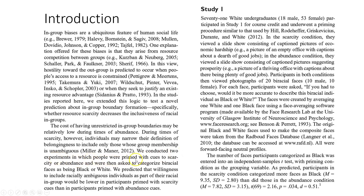'We conducted two experiments in which people were primed with cues to scarcity or abundance, and were then asked to categorize biracial faces as being black or white.' Something would trigger thoughts of scarcity or abundance, and then participants were shown biracial faces and told they needed to categorize whether that person is black or white. 'We predicted that willingness to include racially ambiguous individuals as part of their racial in-group would be lower in participants primed with scarcity cues than in participants primed with abundance cues.'